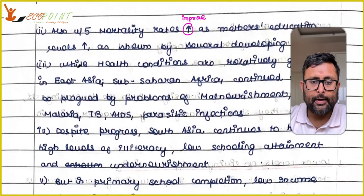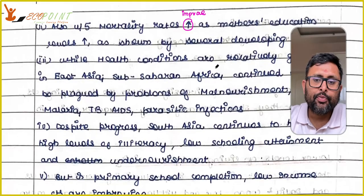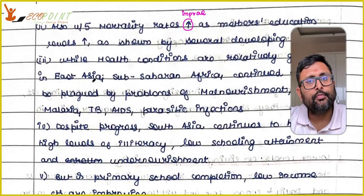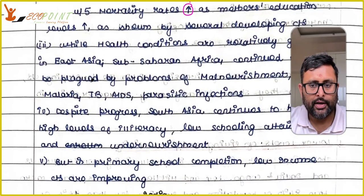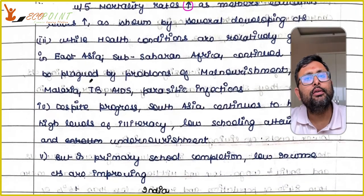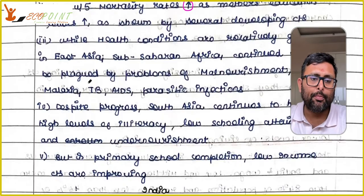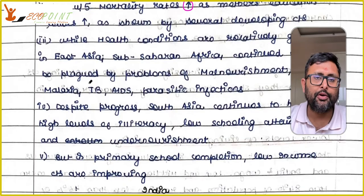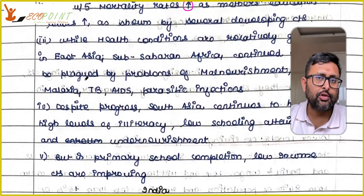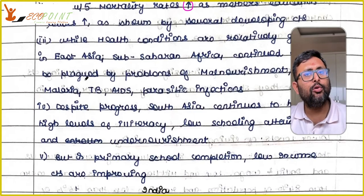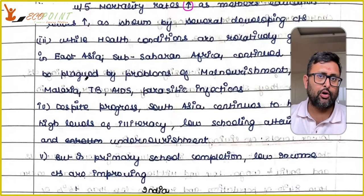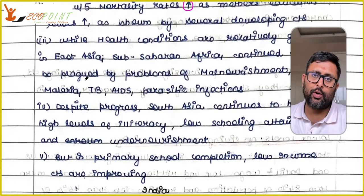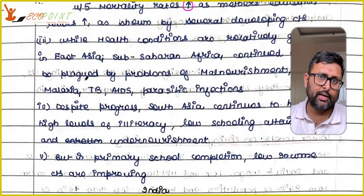Health conditions in East Asia are relatively better. In Sub-Saharan Africa, there are problems like malaria, malnutrition, TB, AIDS, and parasitic infections. This tells you that even within developing countries, there is a lot of difference — one part of the developing world has improved while the other part has not.